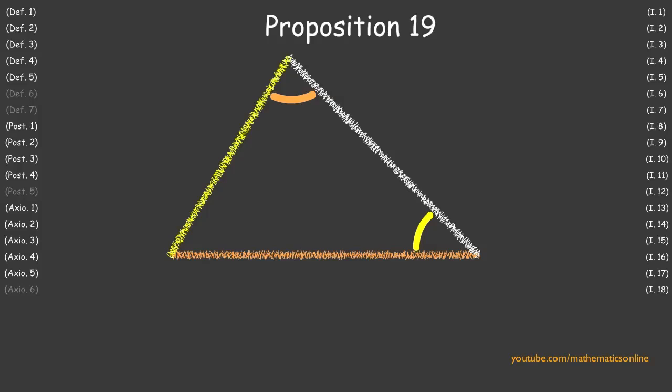In Proposition 19, we proved that if an angle of a triangle is greater than another angle, then the side opposite the larger angle is always greater than the side opposite the smaller angle.